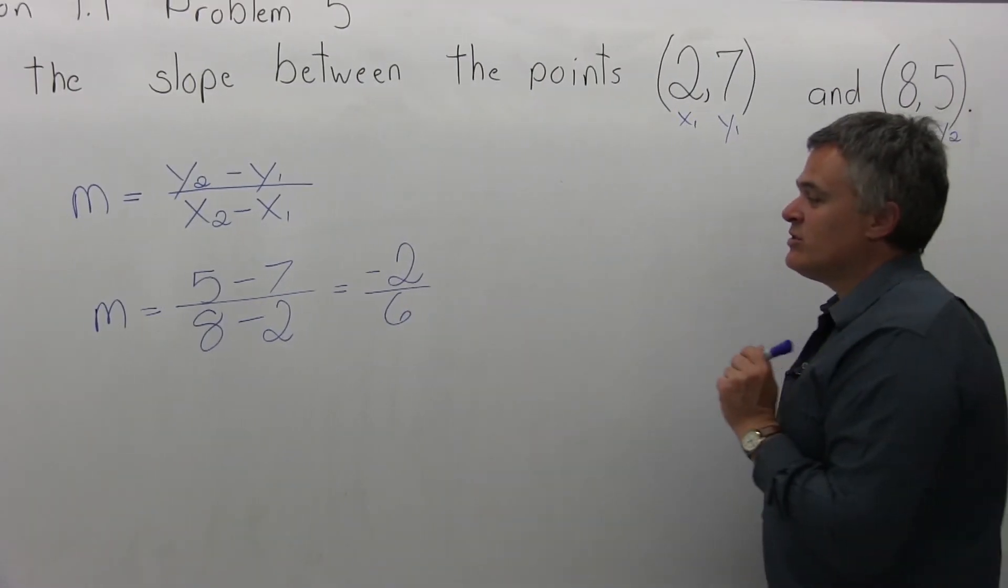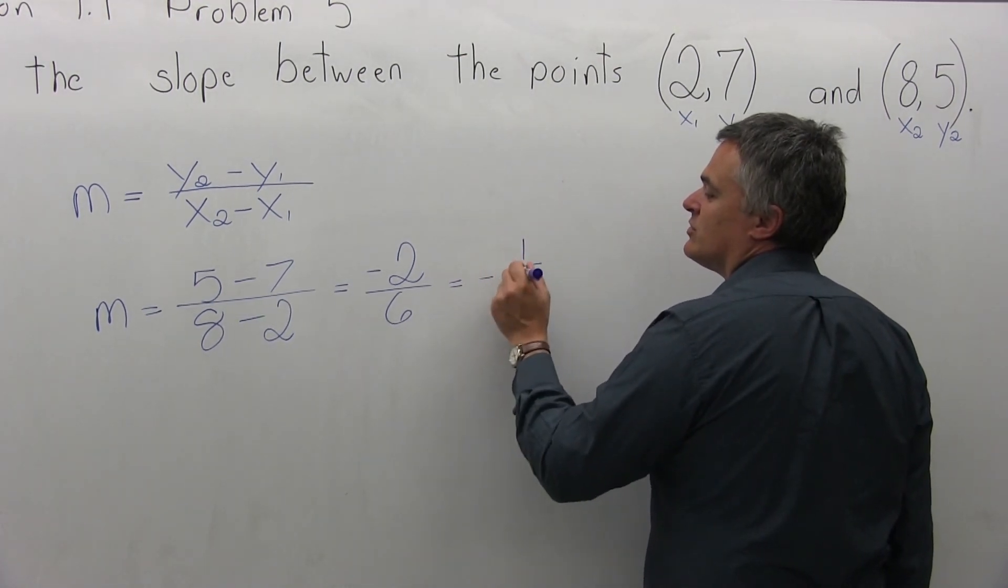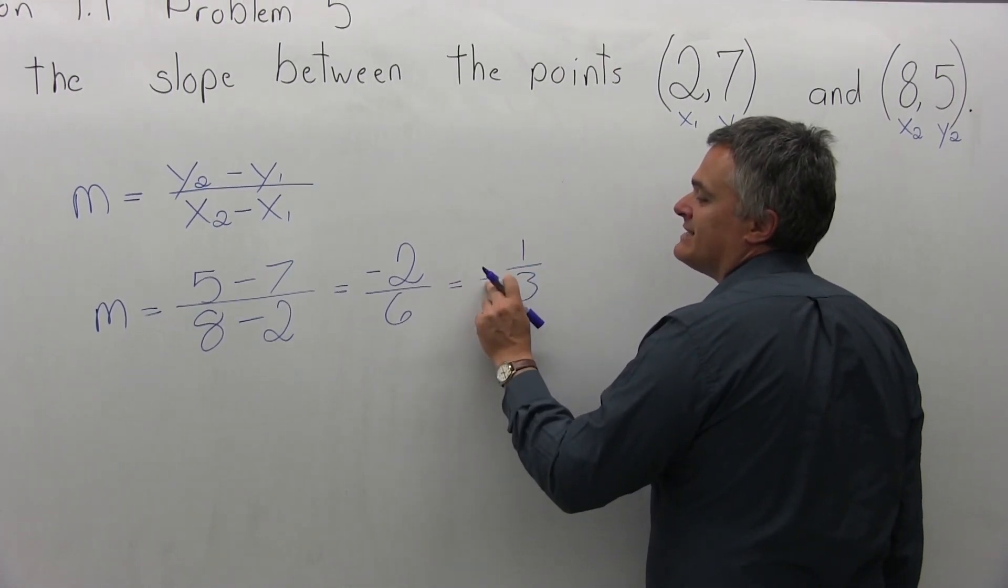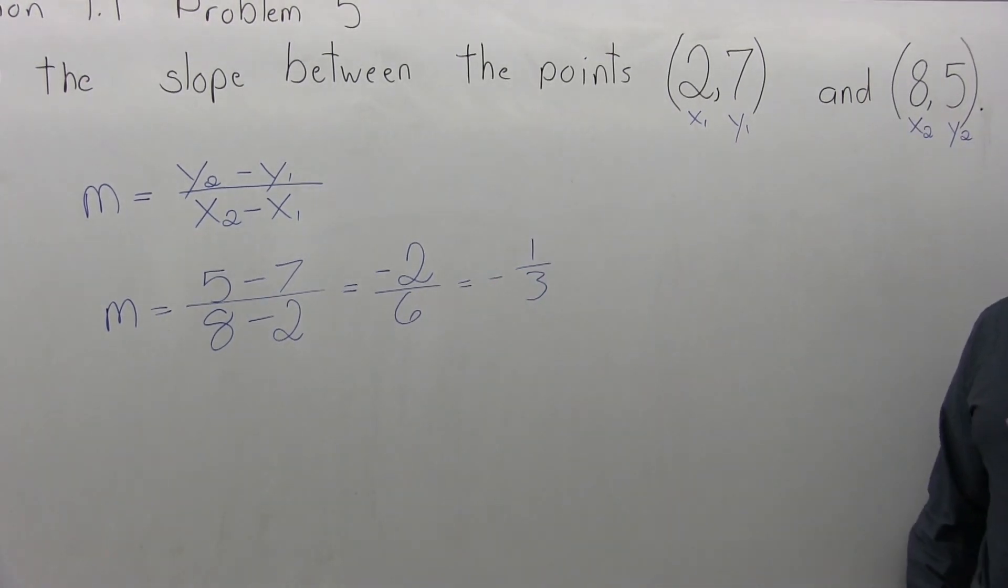And that can be reduced. The 2 and the 6 are both evenly divisible by 2, so it reduces to negative 1/3. And again, it's negative 1/3, don't lose the negative. That's the slope.